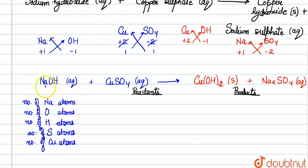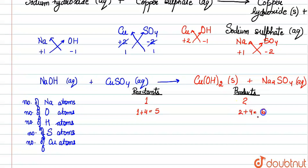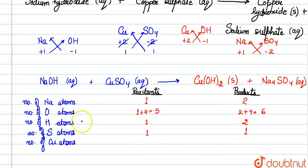Sodium देखें reactants में: एक है NaOH में, और Na₂SO₄ में दो। Oxygen: 1 + 4 = 5 reactants में, और products में 2 + 4 = 6। Hydrogen: reactants में 1, products में 2। Sulfur: reactants और products दोनों में 1। Copper: reactants में 1, products में भी 1। तो copper और sulfur balance हैं, पर sodium, oxygen, और hydrogen balance नहीं हैं।